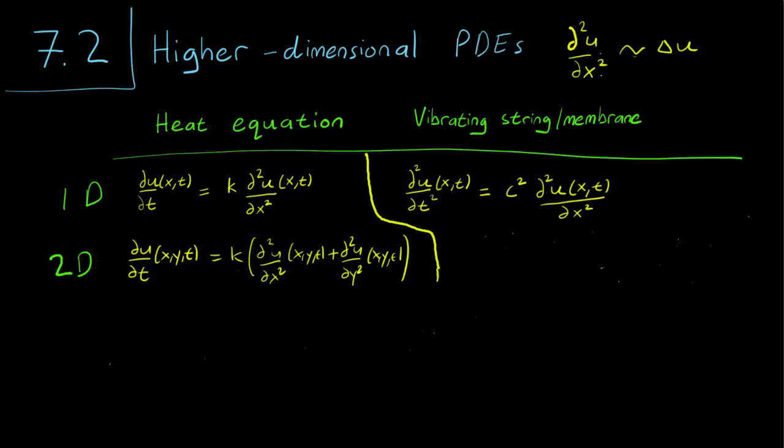Similarly, for the vibrating membrane, a 2D version of the vibrating string equation, we write u(x,y,t). This gives the height of the membrane at the position (x,y) at time t. ∂²u/∂t² equals c² times the Laplacian. So that's going to be ∂²u/∂x² + ∂²u/∂y².